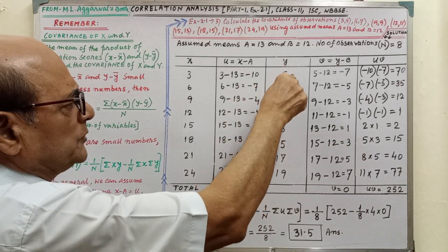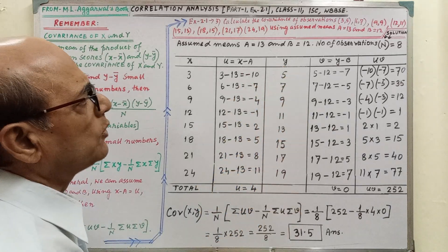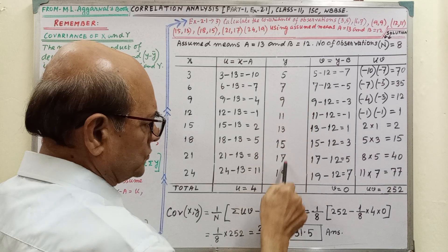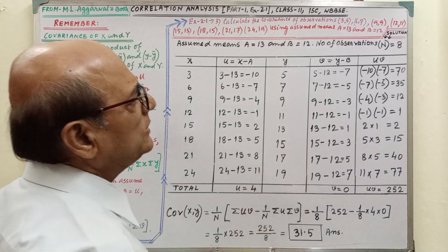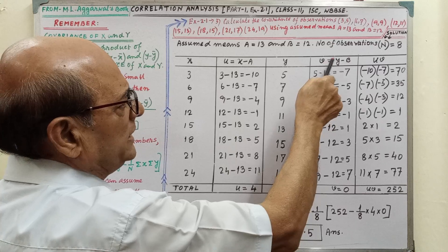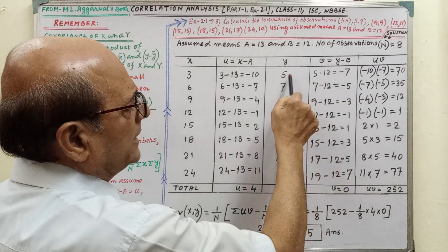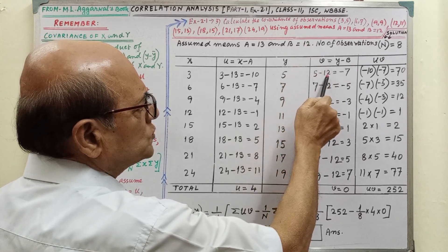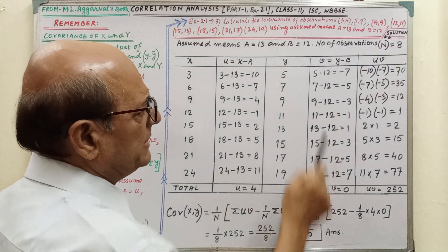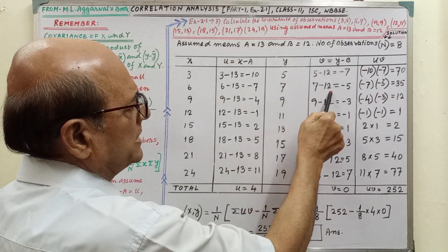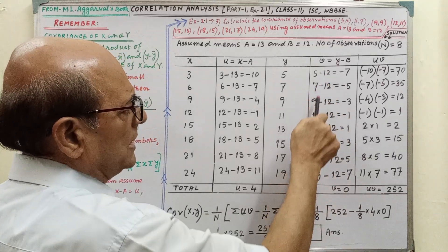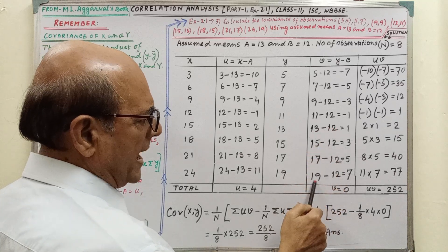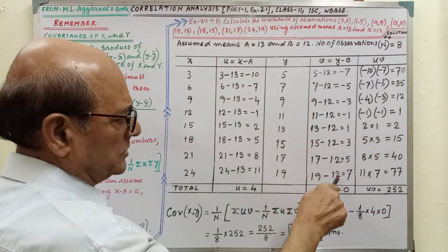After doing this, we have to plot the y coordinates: 5, 7, 9, 11, 13, 15, 17, 19. Then we write v equal to y minus B. y is 5 and B is 12, so 5 minus 12 equals minus 7. Similarly, 7 minus 12 equals minus 5. Then 9 minus 12, 11 minus 12, 13 minus 12, 15 minus 12, 17 minus 12, and 19 minus 12.